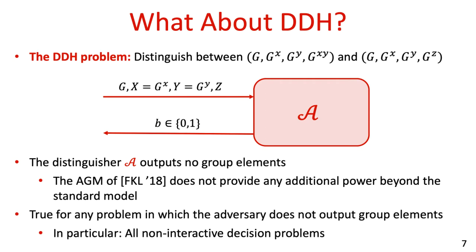It is not hard to see that this is true for any problem in which the adversary does not output group elements, which includes all non-interactive decision problems — all problems in which the adversary has to distinguish between two a priori fixed distributions. Fuchsbauer et al. mention this limitation in their paper and explicitly leave it as an important open question to generalize the algebraic group model to enable reasoning about decisional problems as well.